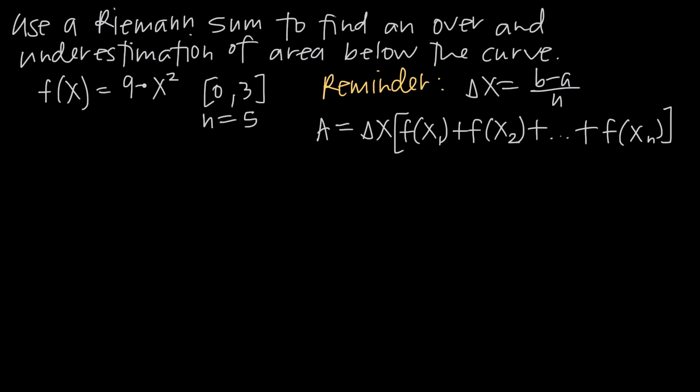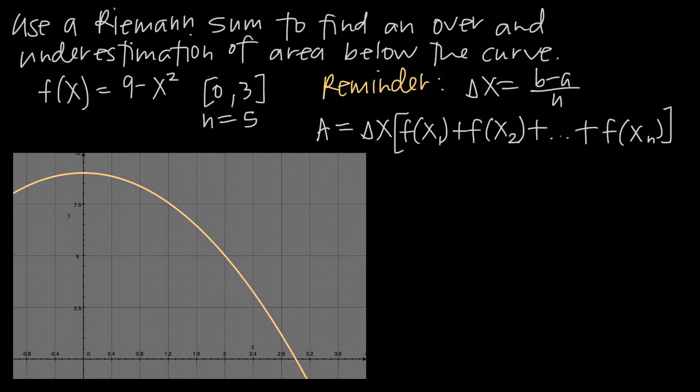If we go ahead and graph f equals 9 minus x squared, it's going to look like this, just to give us a visual of the function. The first thing we want to do with any Riemann sum problem is find delta x, which is the width of each subinterval or the width of each rectangle. We're going to use the formula delta x equals b minus a divided by n.